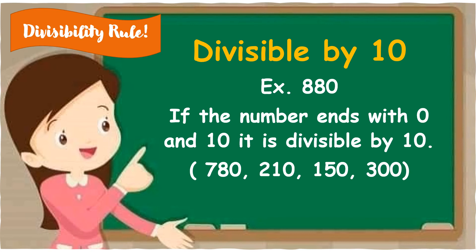Divisibility rule — divisible by 10. Example: 880. If the number ends with 0, it is divisible by 10. Example: 780 — ang 780 ay nag-e-end sa 0, therefore it is divisible by 10. 210 — ang 210 ay nag-e-end siya sa 10, therefore it is divisible by 10. 150 — it ends with 0, therefore it is divisible by 10.